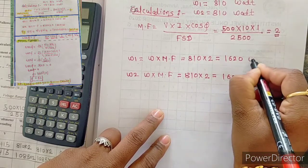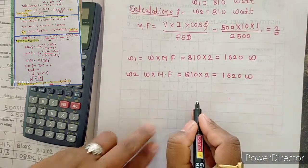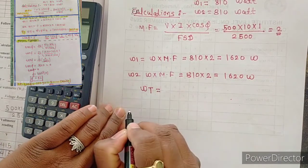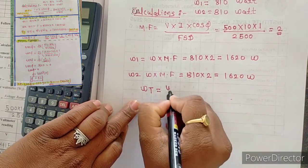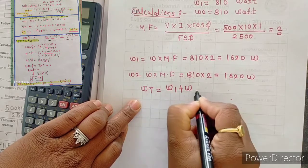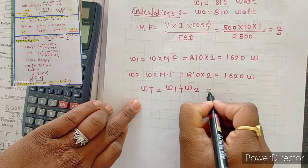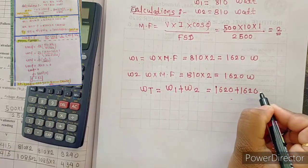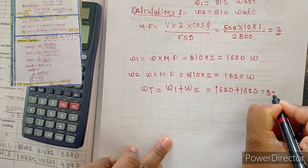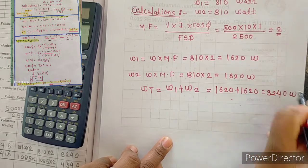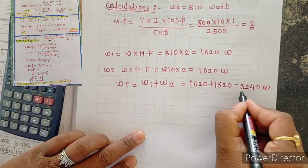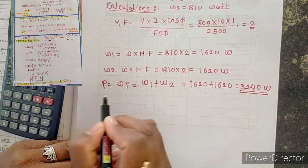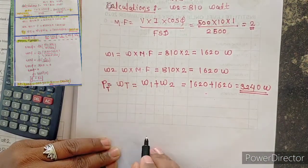The total active power equals W1 plus W2, so 1620 + 1620 = 3240 watts. This is our total active power — the active power in the three-phase circuit consumed by the load.